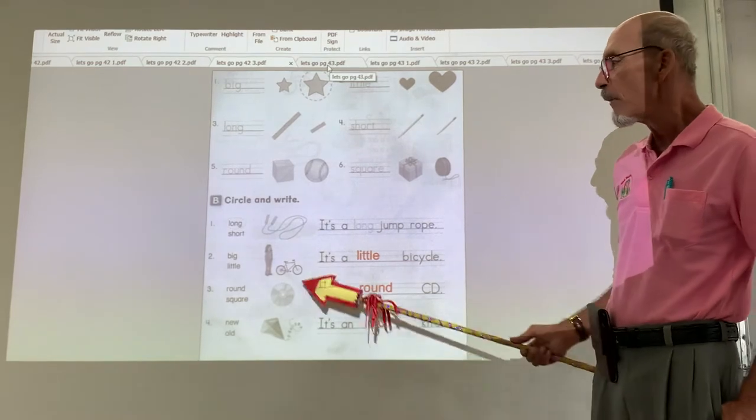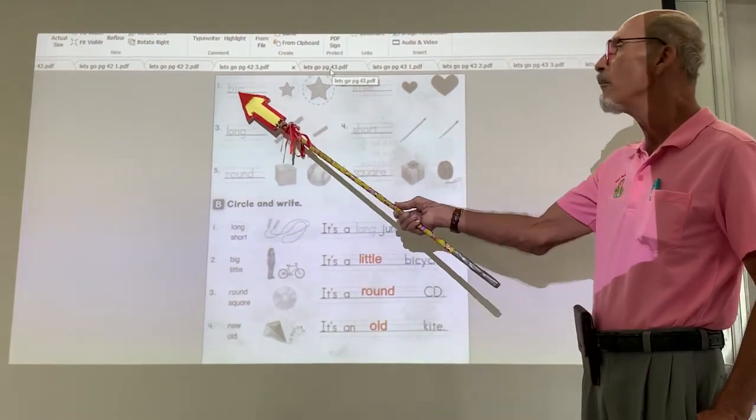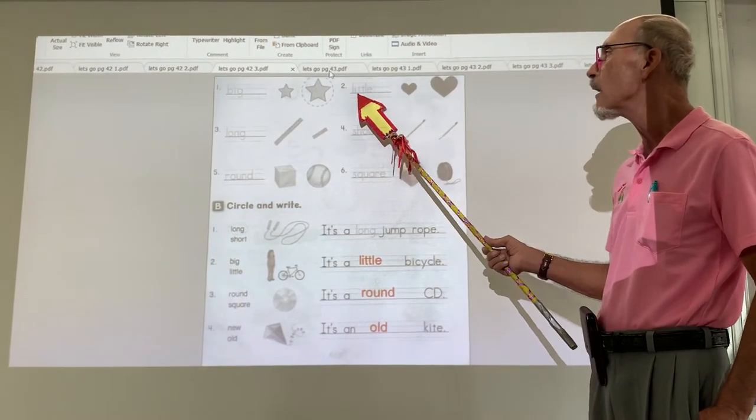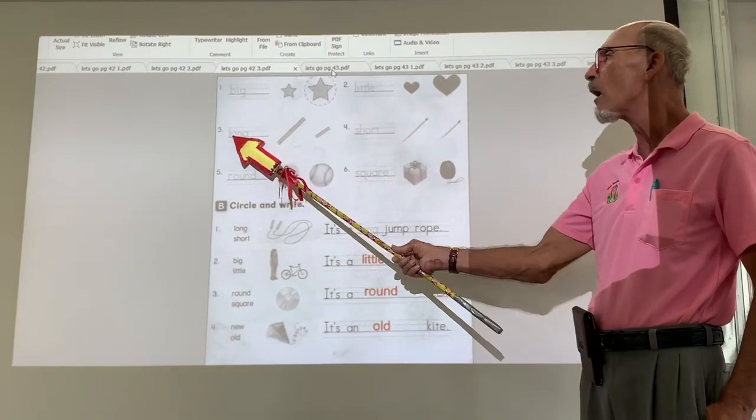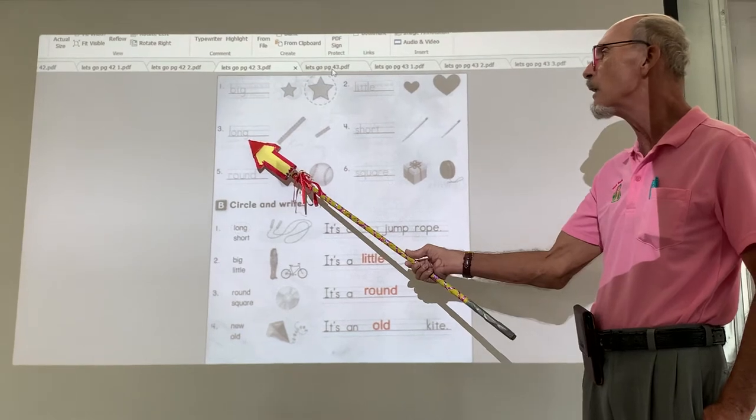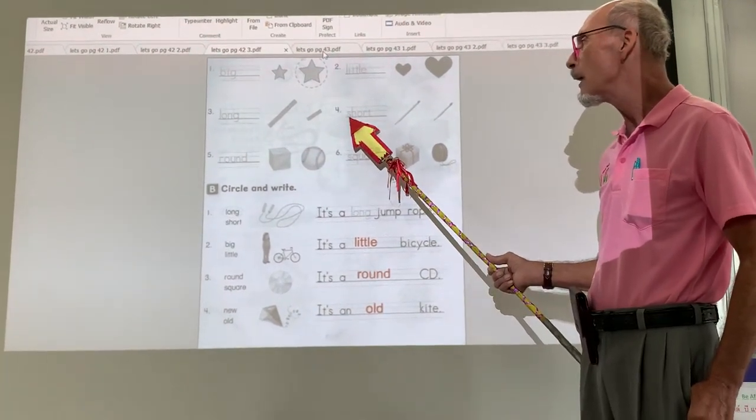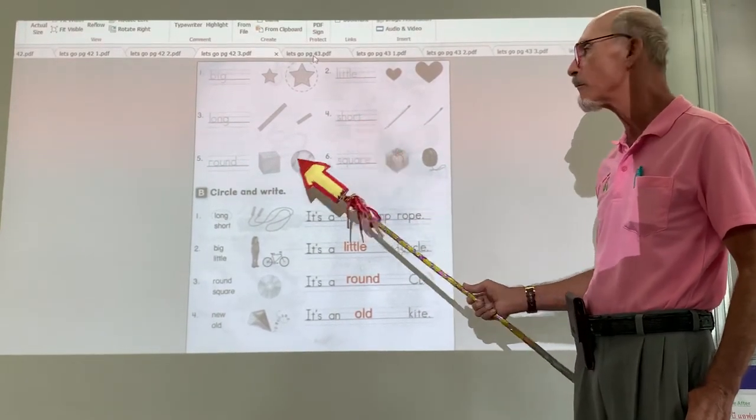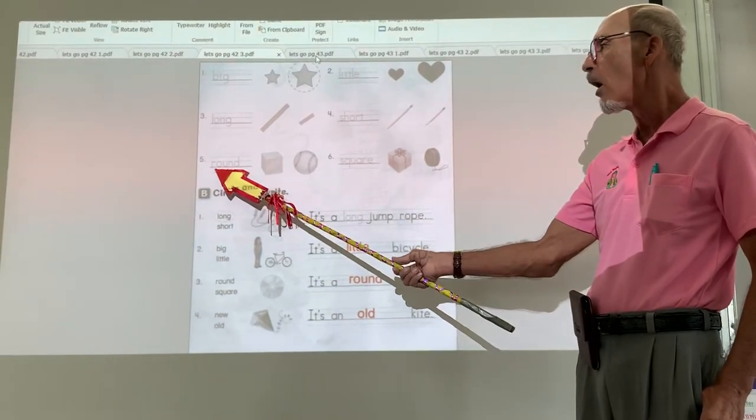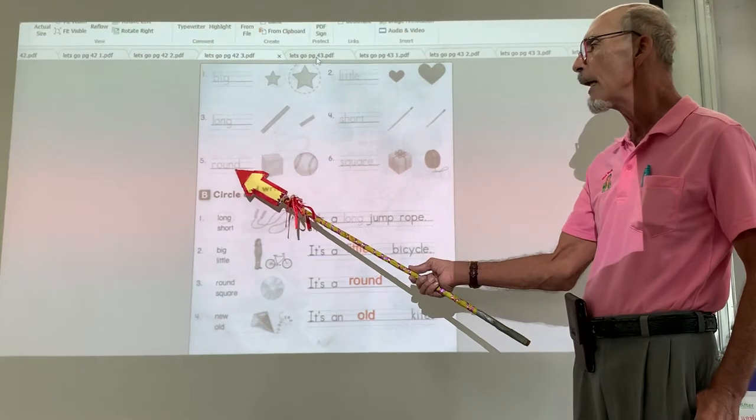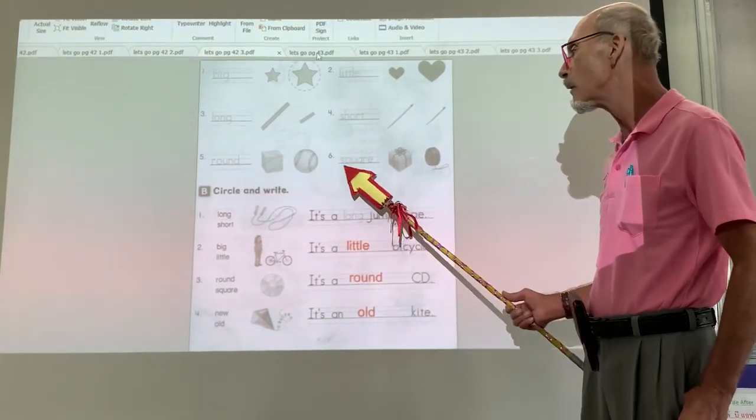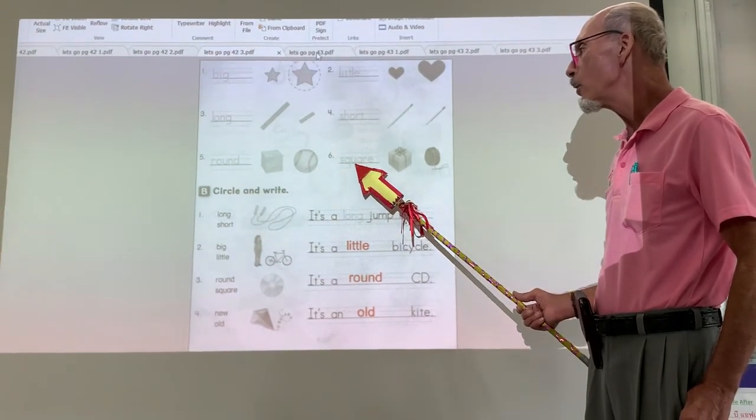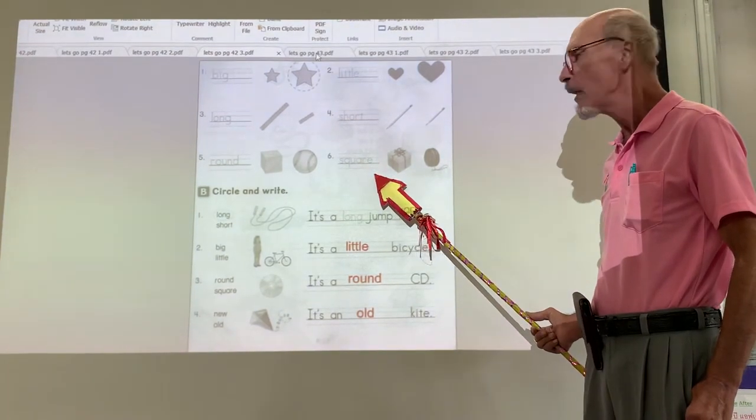Now, make sure you open your book. Trace the words. B-I-G. L-I-T-T-L-E, little. Long, L-O-N-G. Short, S-H-O-R-T. Round, R-O-U-N-D. Square, S-Q-U-A-R-E.